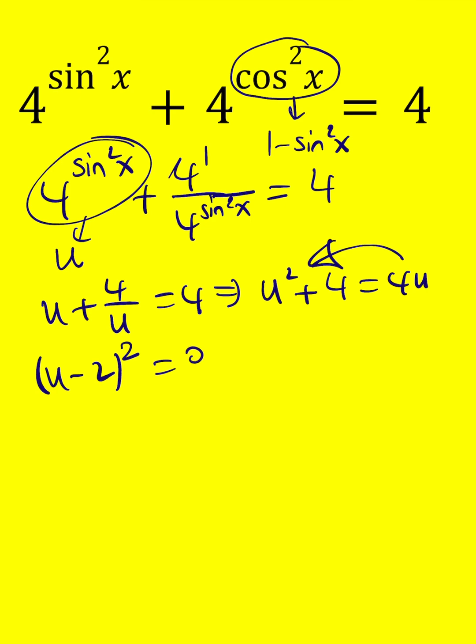That means u is equal to 2. If u is equal to 2, that's only one solution, by the way. But u is equal to 4 to the power sine squared x at the same time. But 2 is square root of 4, which can be written as 4 to the power 1 half. We got the same base, so the exponents have to be the same, which means sine squared x is equal to 1 half.